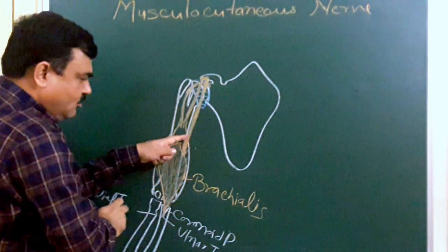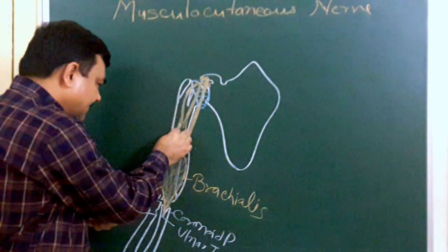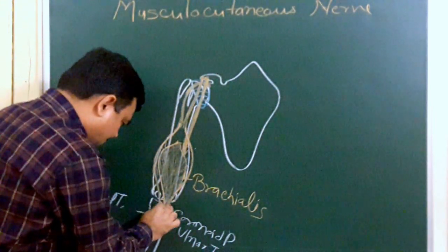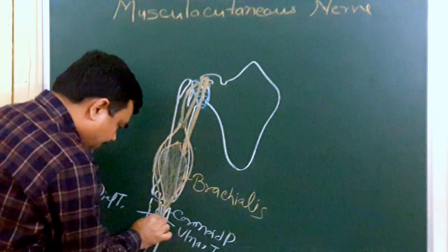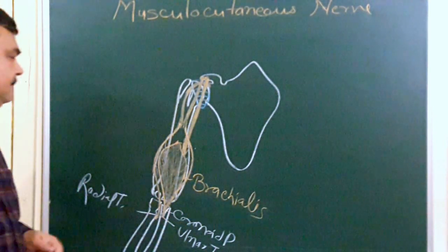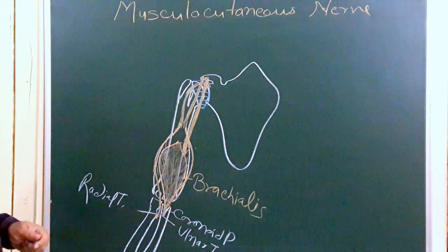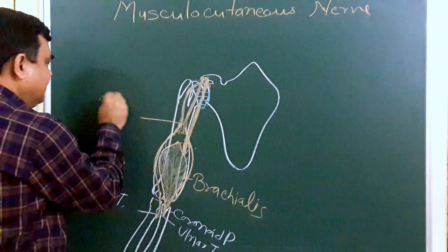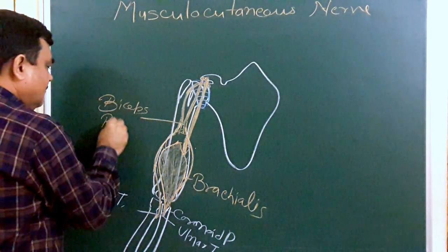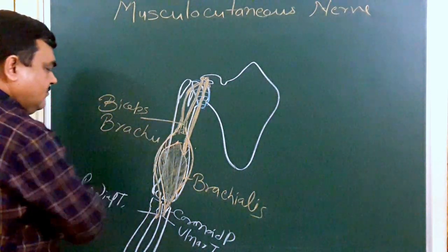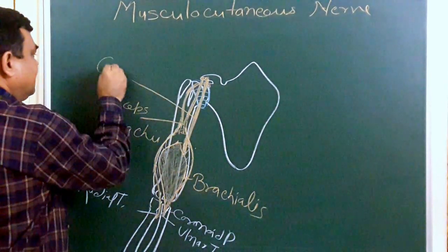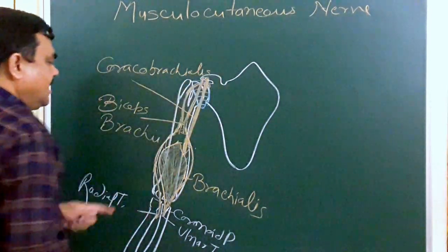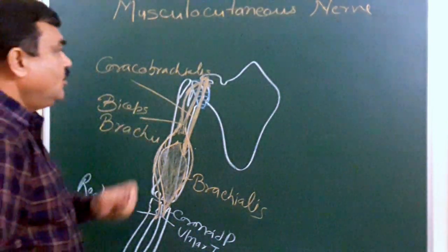All these muscles — coracobrachialis and brachialis — are covered by biceps, which lies over them. Biceps is inserted on the radial tuberosity. So these three muscles — biceps brachii, brachialis, and coracobrachialis — are the three muscles related to the musculocutaneous nerve.